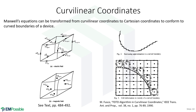Curvilinear coordinates. Here our mesh cells become sort of like jelly, and we can conform to perfectly curved boundaries. Typically, this is done not by making every single cell in the grid curvilinear, but only the ones that need to conform to a curved boundary. So in the cells immediately adjacent to a curved boundary, we modify the update equations to account for the curvilinear coordinates.